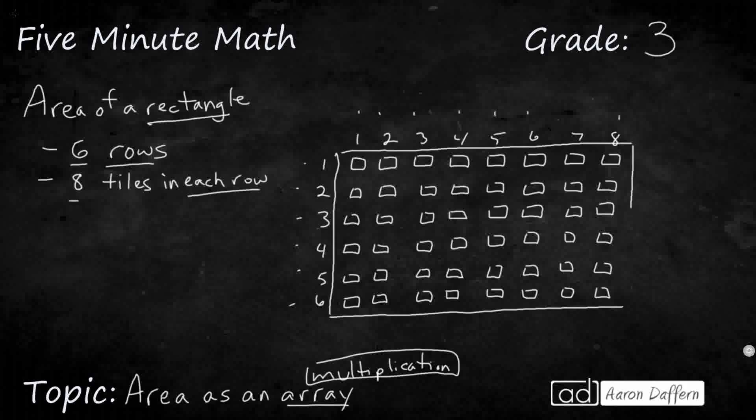And we're going to pretend that each of those tiles are the same area, and we're just kind of placing those tiles inside the rectangle. So then my question is, what is the area of the rectangle? Well, the area of the rectangle is going to be how many tiles fit inside. So I can either count by eights, because I've got six rows of eight. So I could say eight, 16, 24, 32, 40, 48.